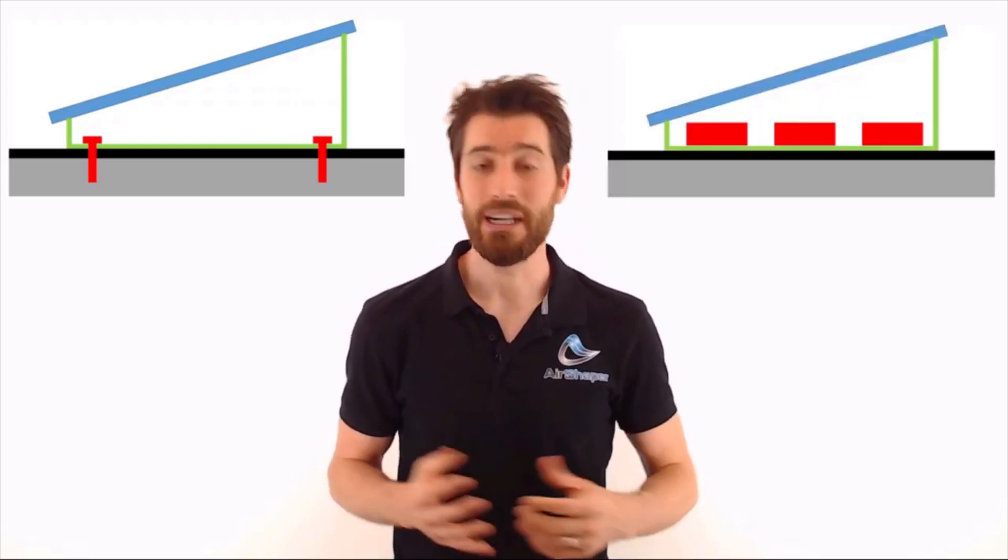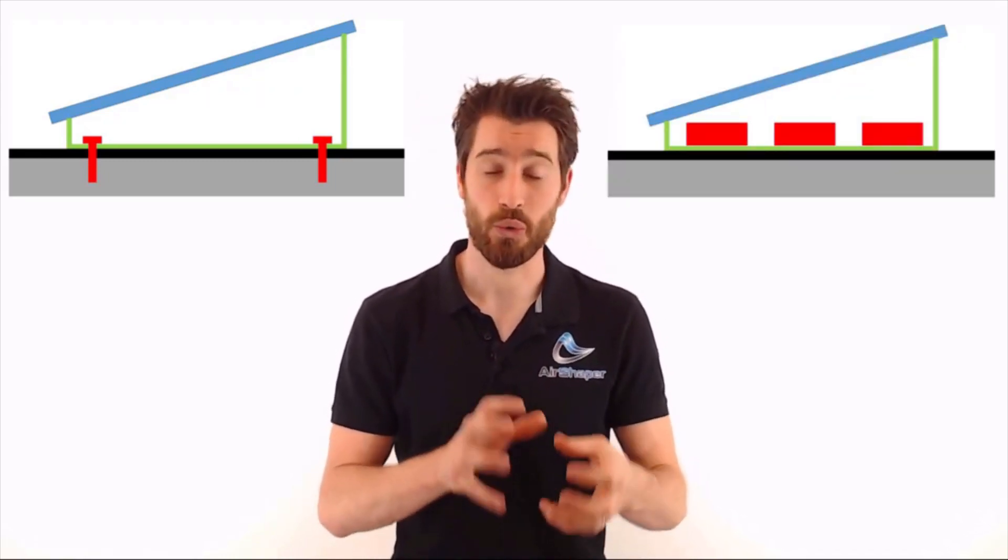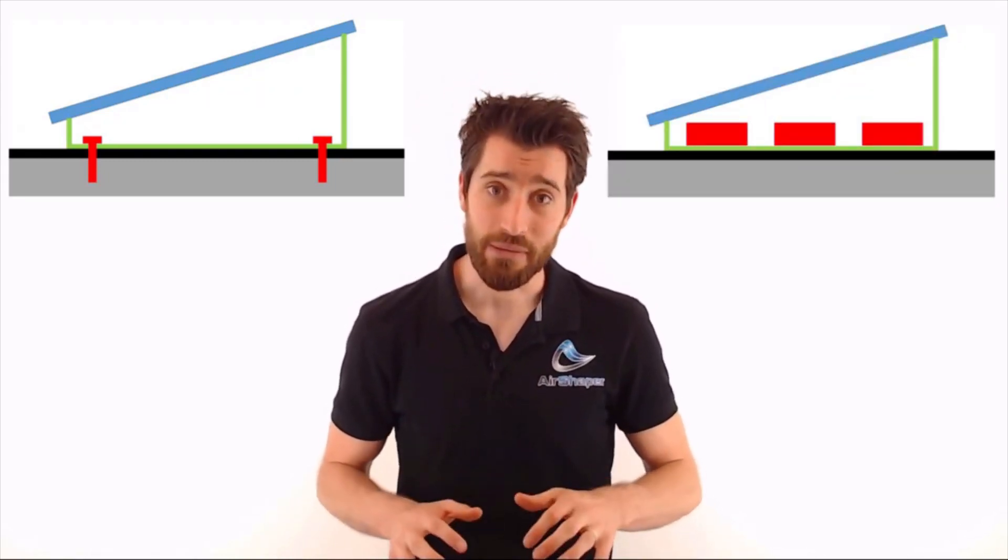Because penetrating the waterproof coverage for anchoring purposes is not always an option, many operators just put ballast or weight on the mounting system to keep things down. This avoids a leakage problem, but it adds a new one, the extra weight.